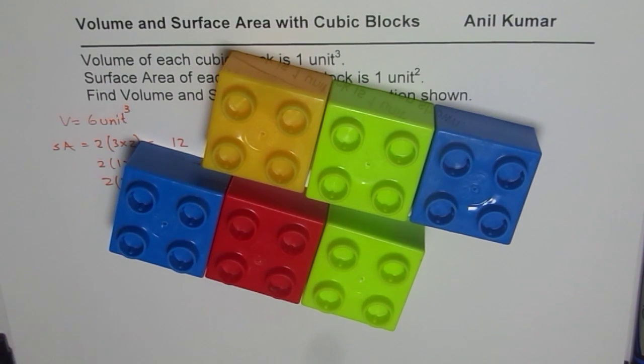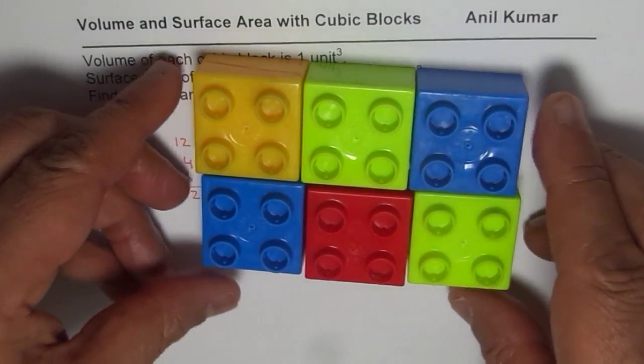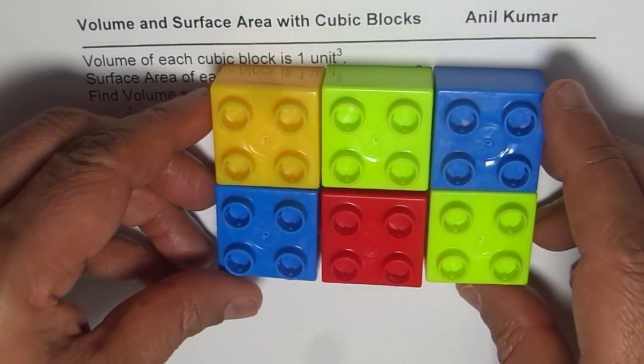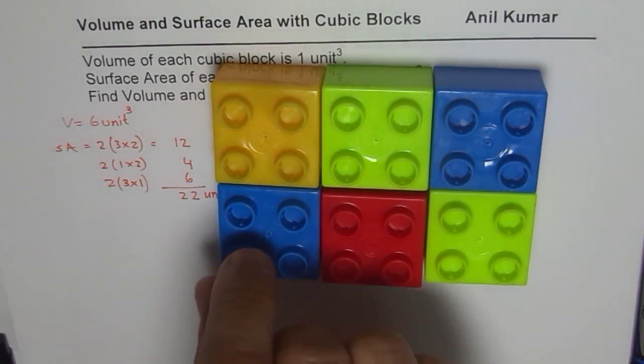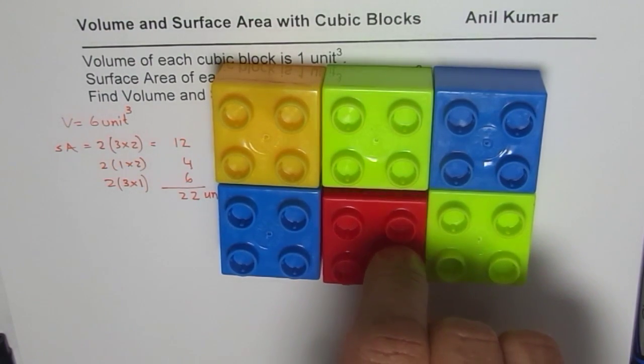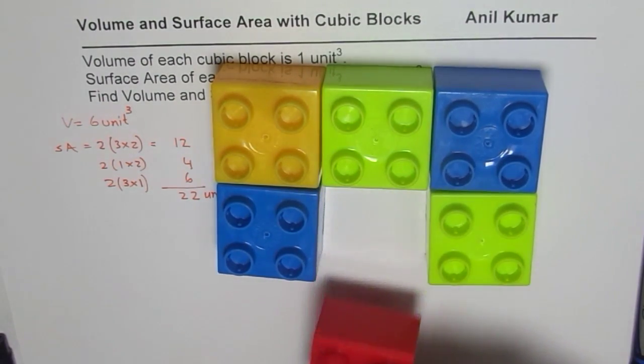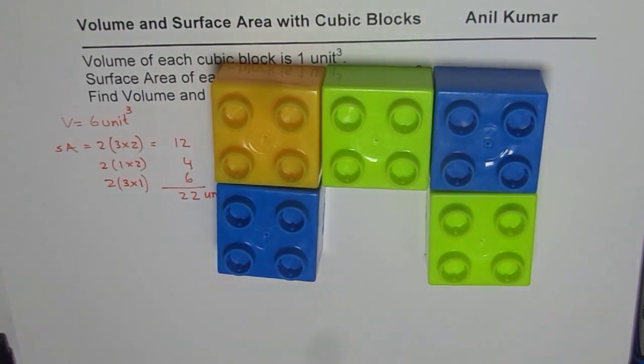The other question for you is kind of like this. We started with this particular block, correct? Now if I remove some blocks from here—let's see, if I remove this block, one of the blocks—then what happens to the surface area? Does it increase or decrease? If so, by how much?